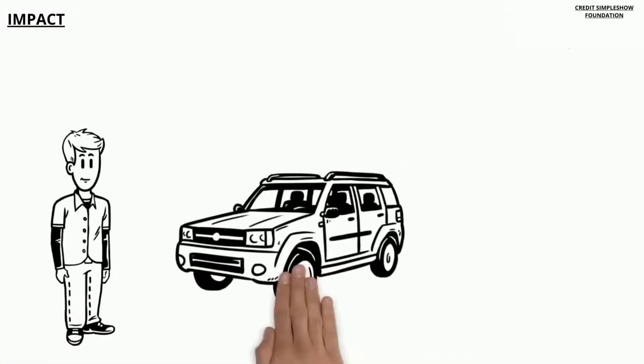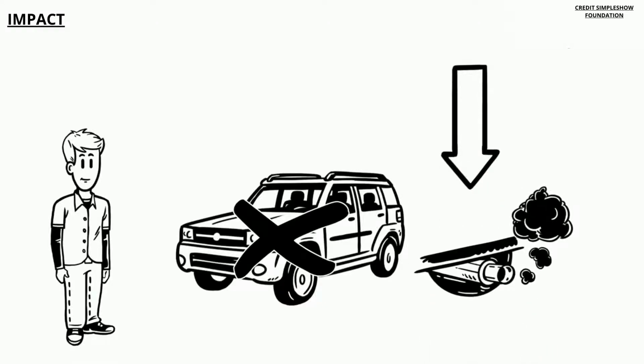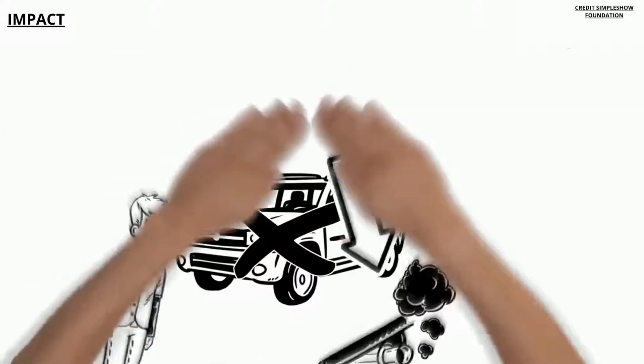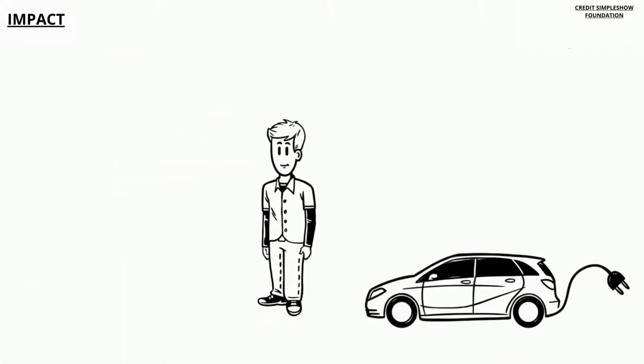Josh decides he doesn't want to get a truck anymore and wants to help reduce the emission of greenhouse gases instead. Josh buys an electric car to lessen greenhouse gas pollution.